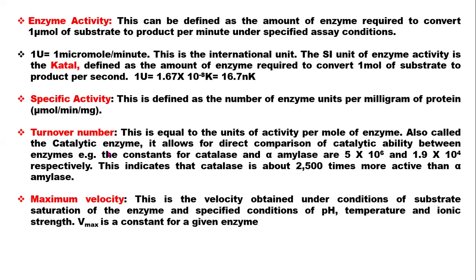We also have turnover number, which equals the units of activity per mole of enzyme. It is also called the catalytic constant, and it allows for direct comparison of the catalytic ability between enzymes. We also have maximum velocity, Vmax, which is the velocity obtained under conditions of substrate saturation of the enzyme at specified pH, temperature, and ionic strength.